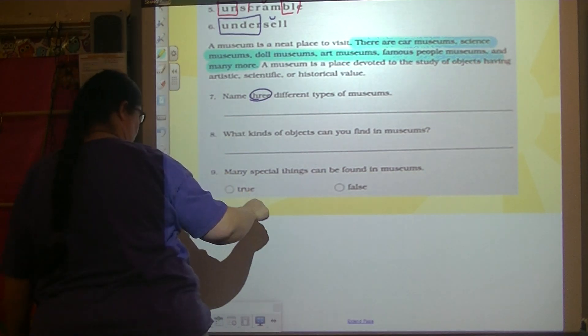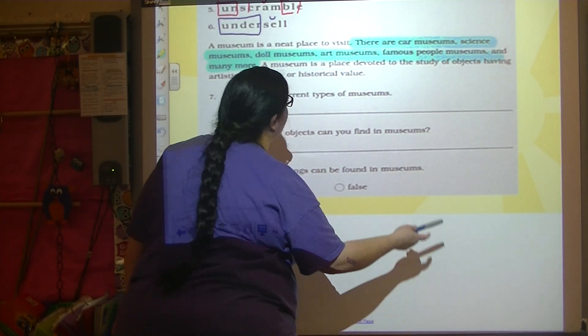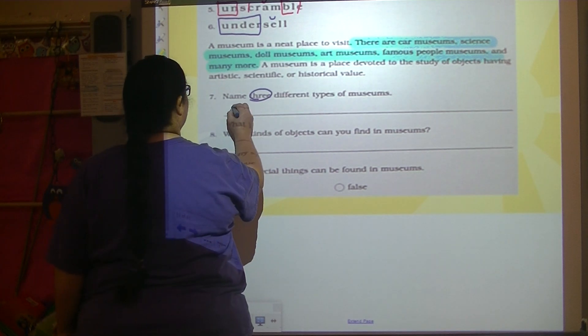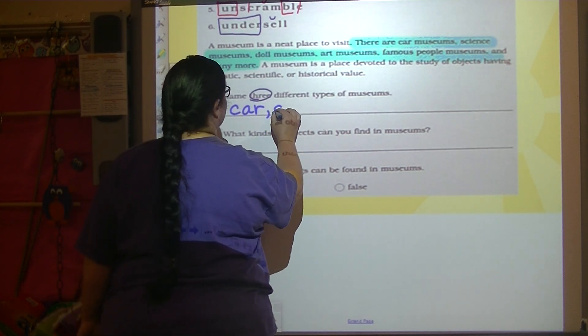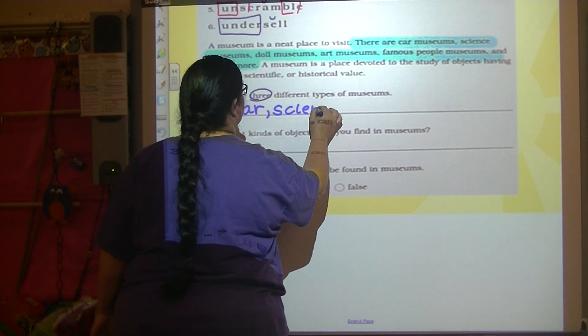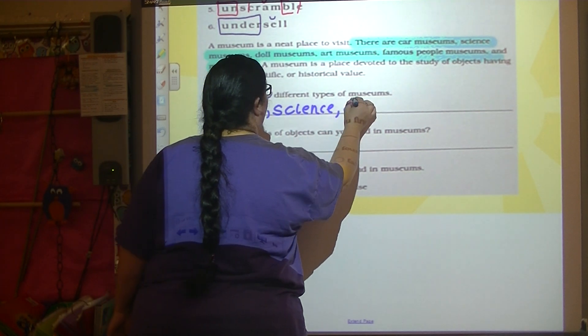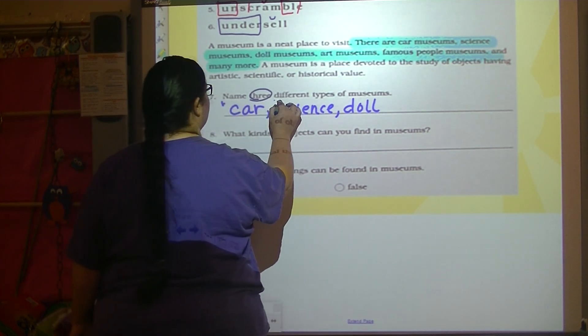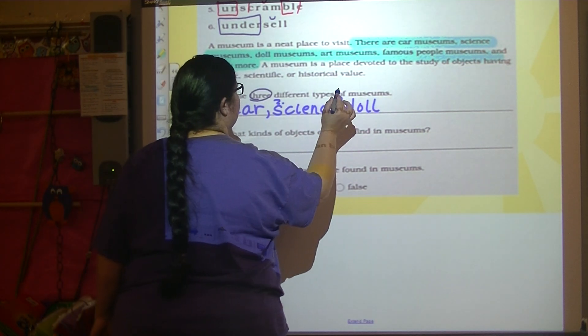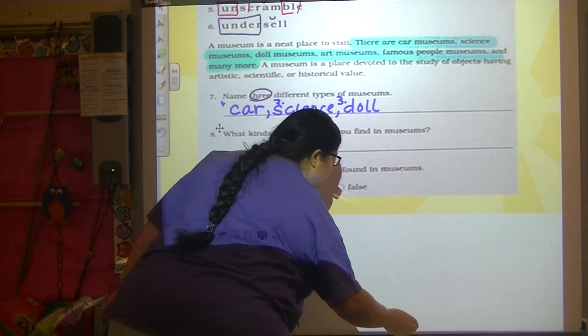Choose three. Alright, so I'm going to say car, science, doll. Alright, that's my one, two, three. You choose three. Any three you choose.